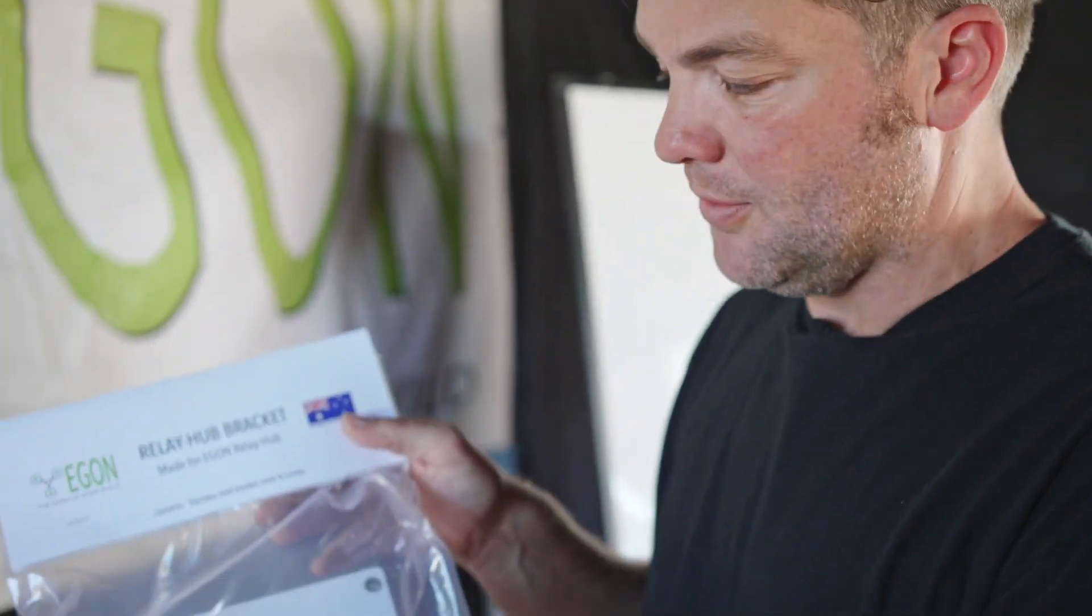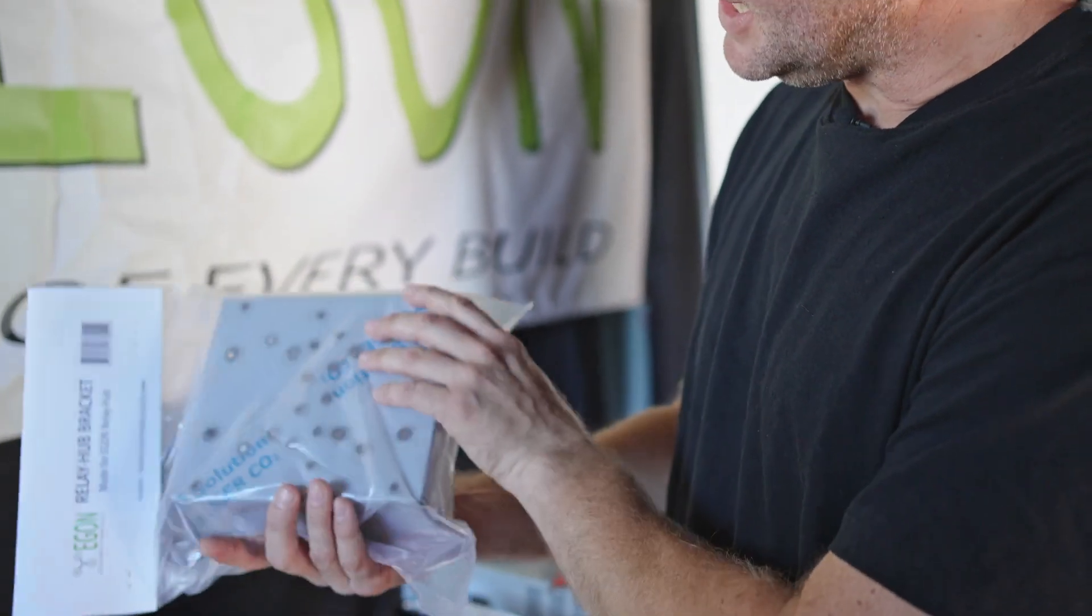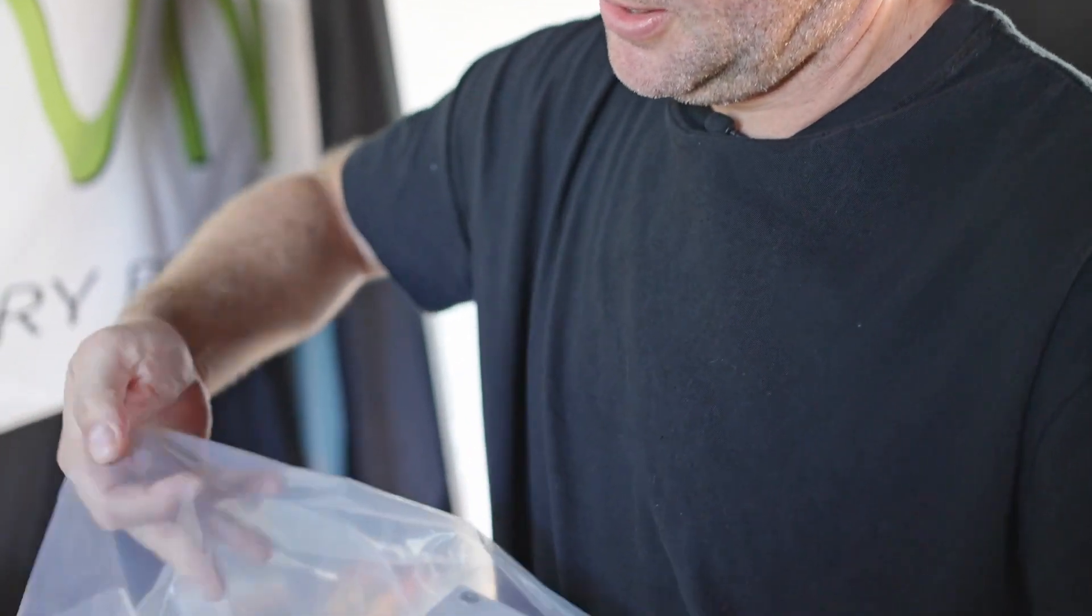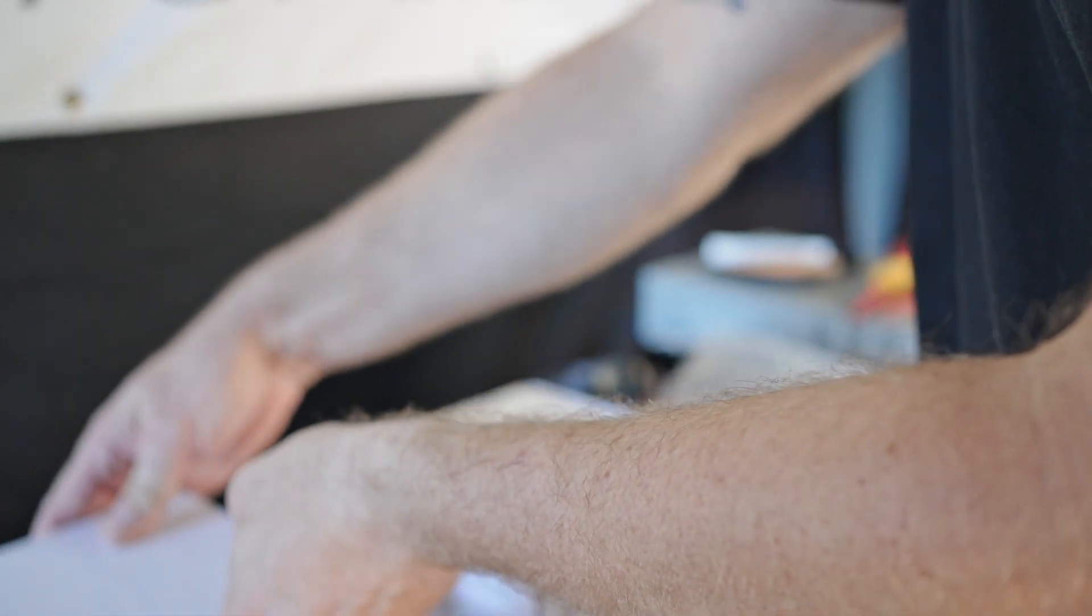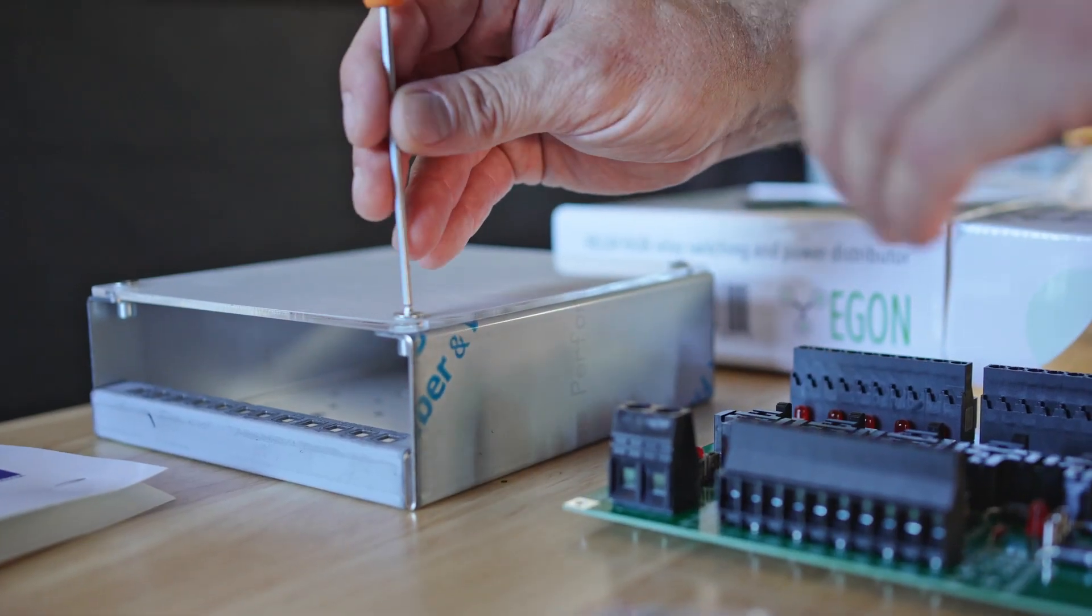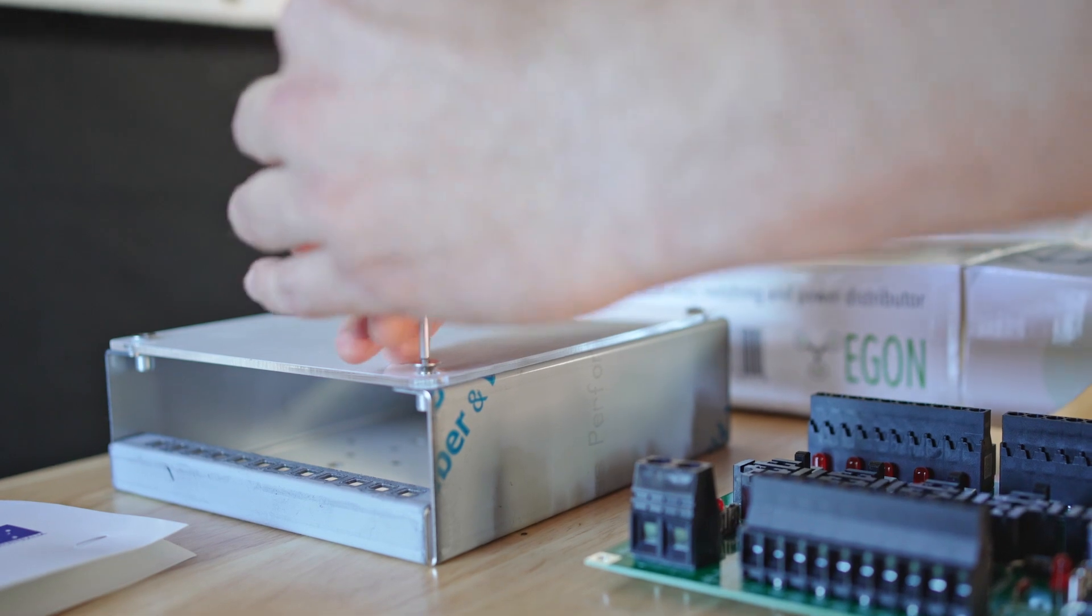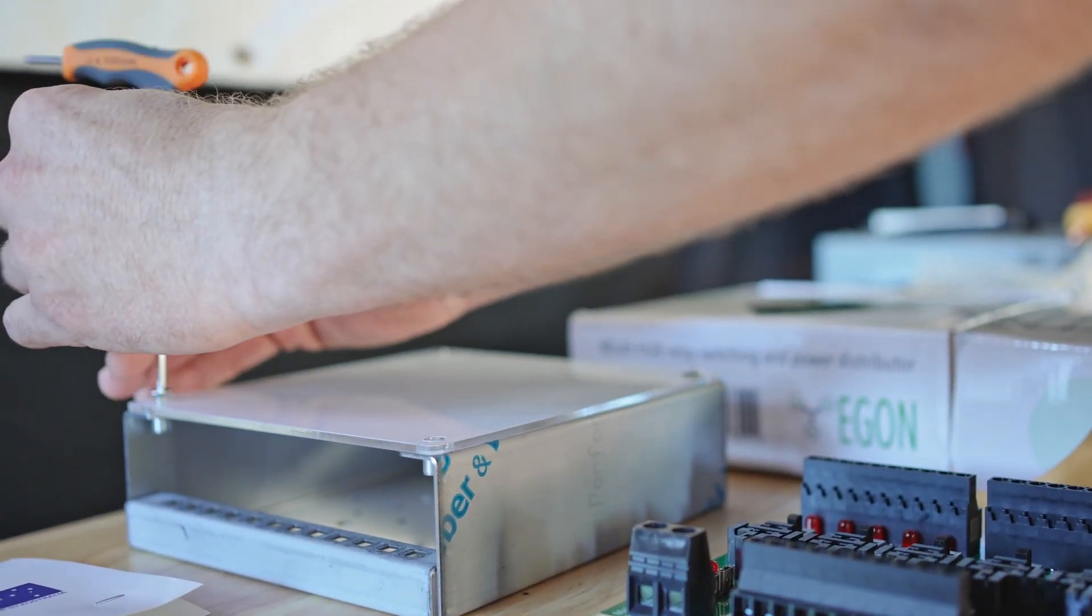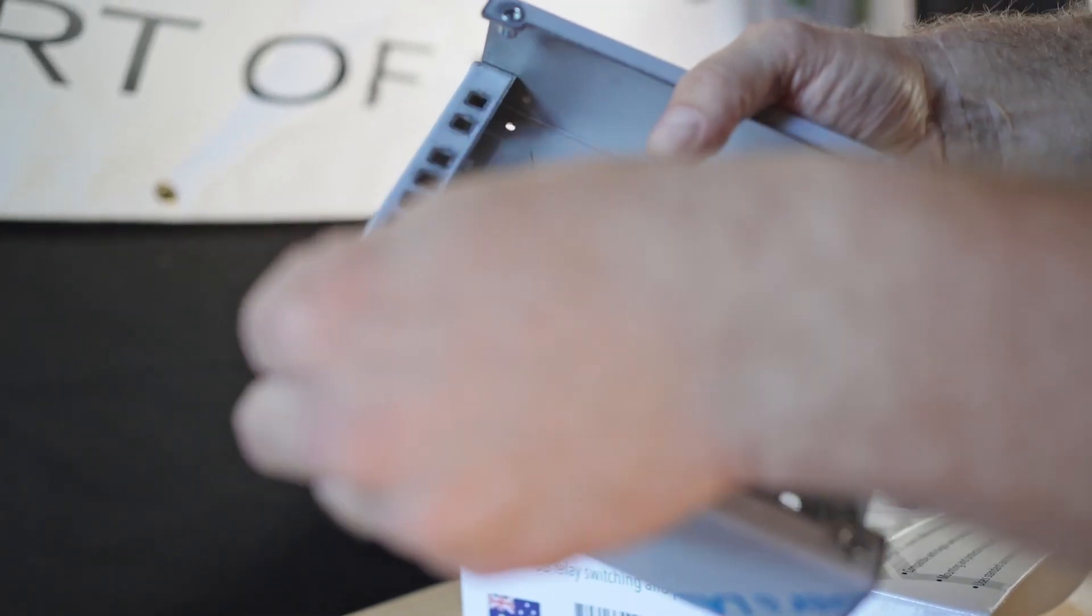This is the bracket for the Egon relay hub and it comes with a protective layer on it to take it out of the box or its wrapping. This is on there just for protection, so when you receive it the first thing you have to do is take the allen keys out so that you can get the cover off the bracket. Another fun part, peeling off the protective layer.